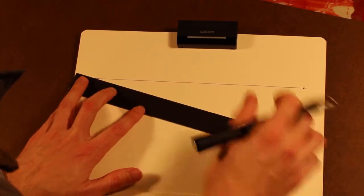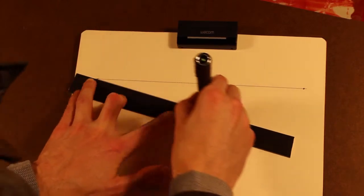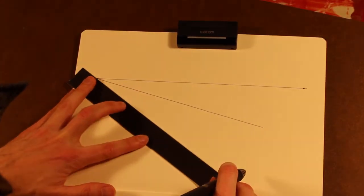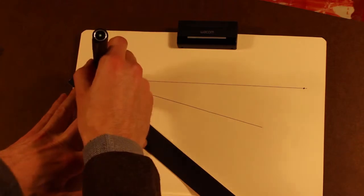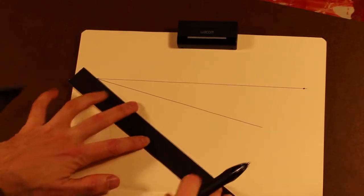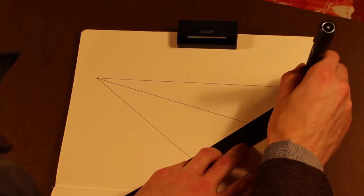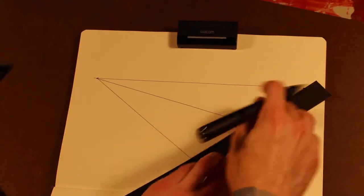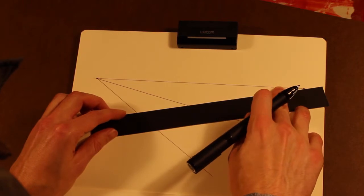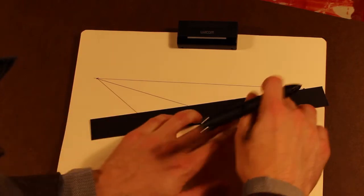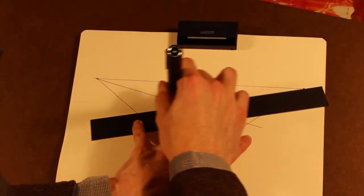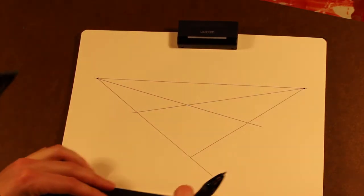Again, we're going to draw a similar plane. Just draw a triangle out from the vanishing point, from each of the vanishing points. Make them intersect. You've got a plane. Boom. There we go.